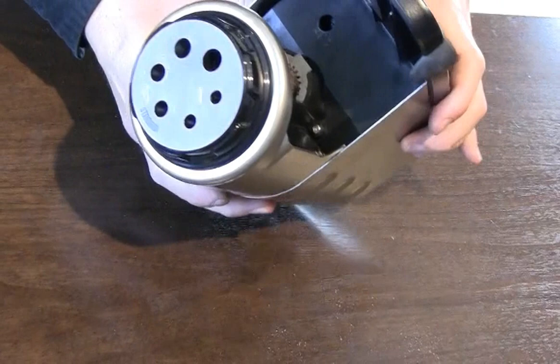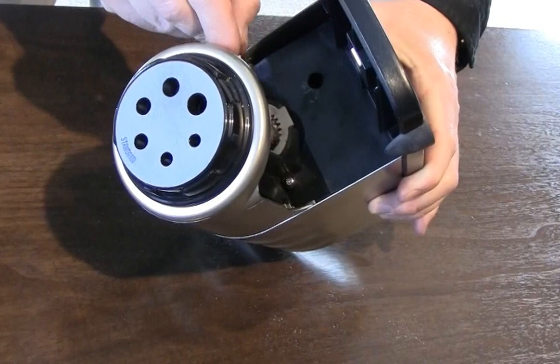To free the cutters from shaving debris, use a small tool such as a paper clip to clear the shavings out of the gear teeth.